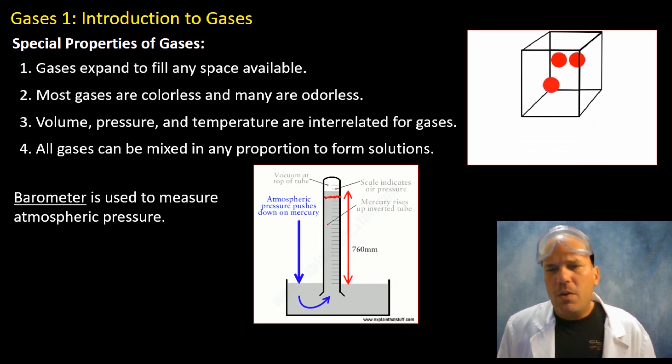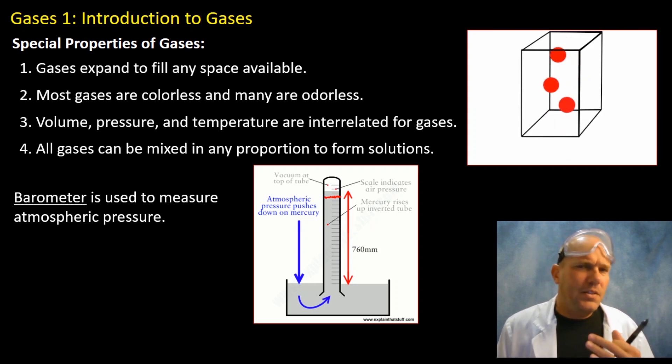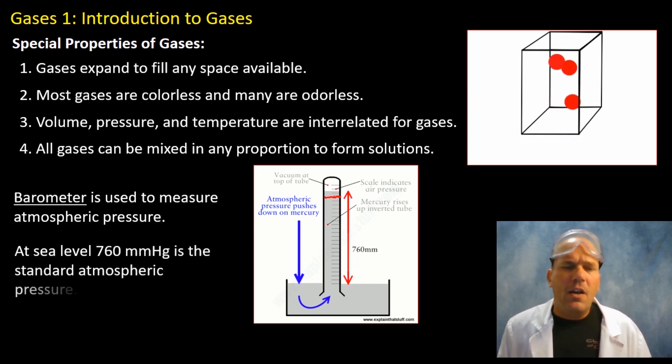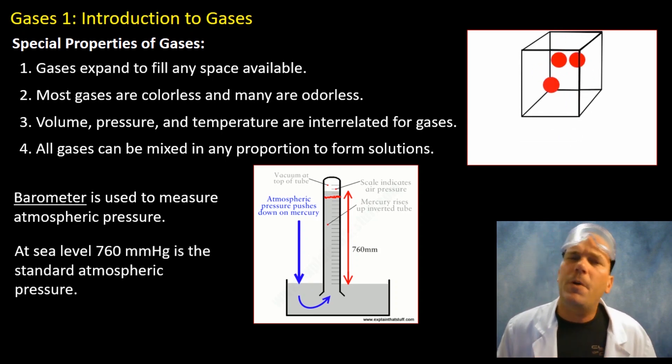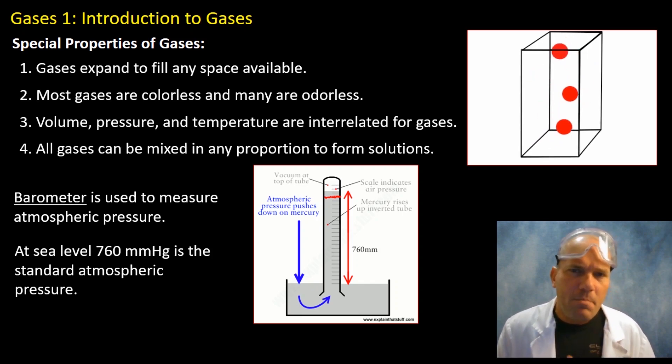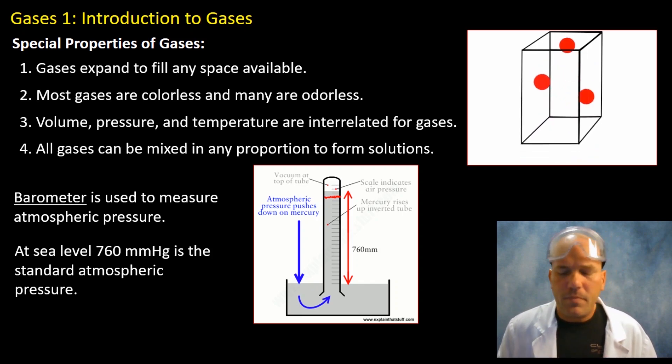So this is used to measure atmospheric pressure. Now, at sea level, our standard atmospheric pressure is 760 millimeters of mercury.